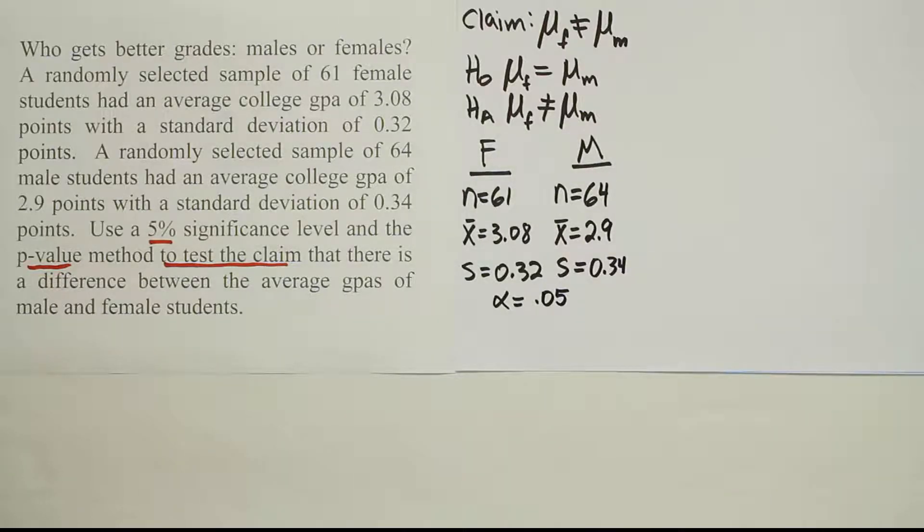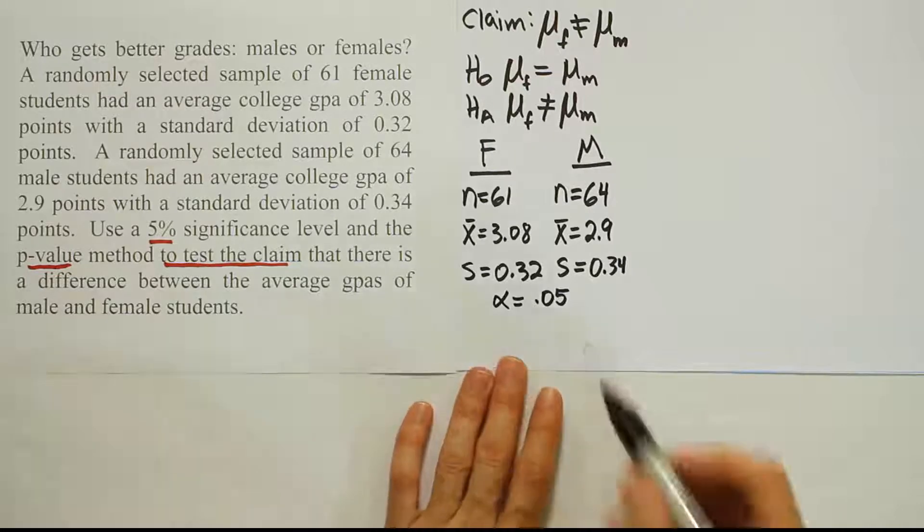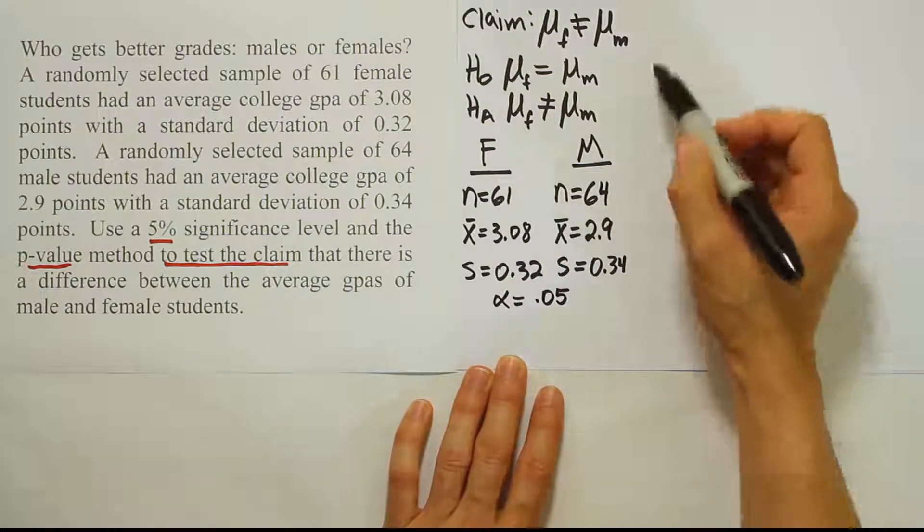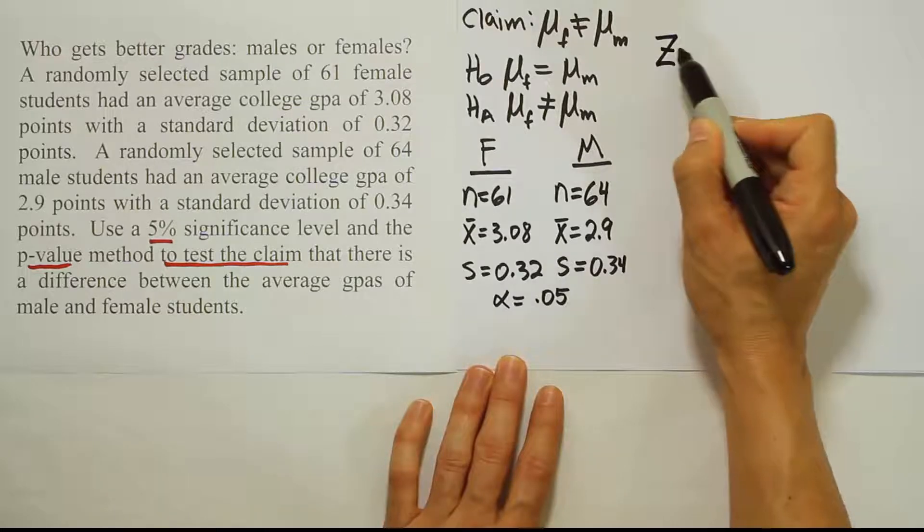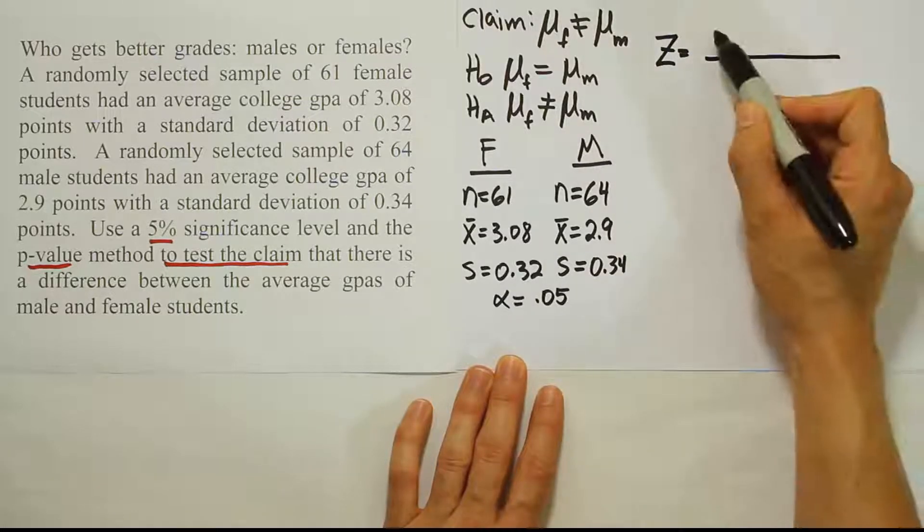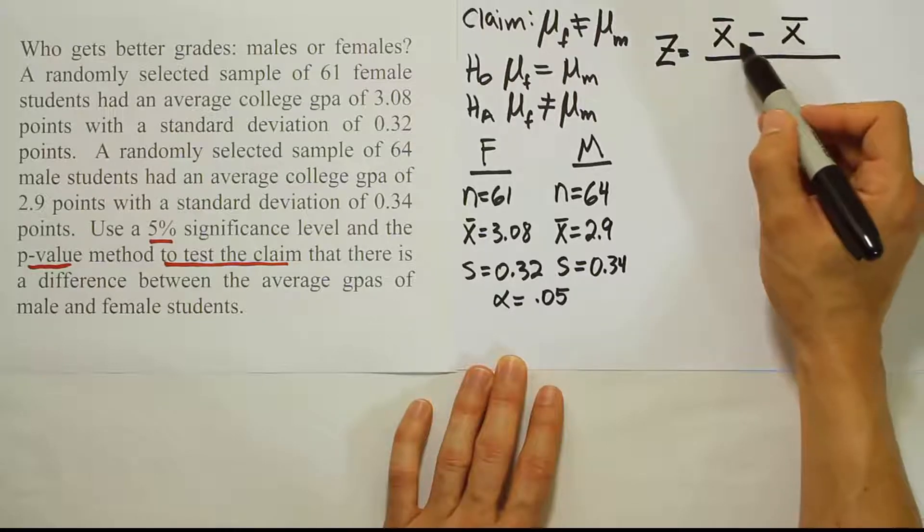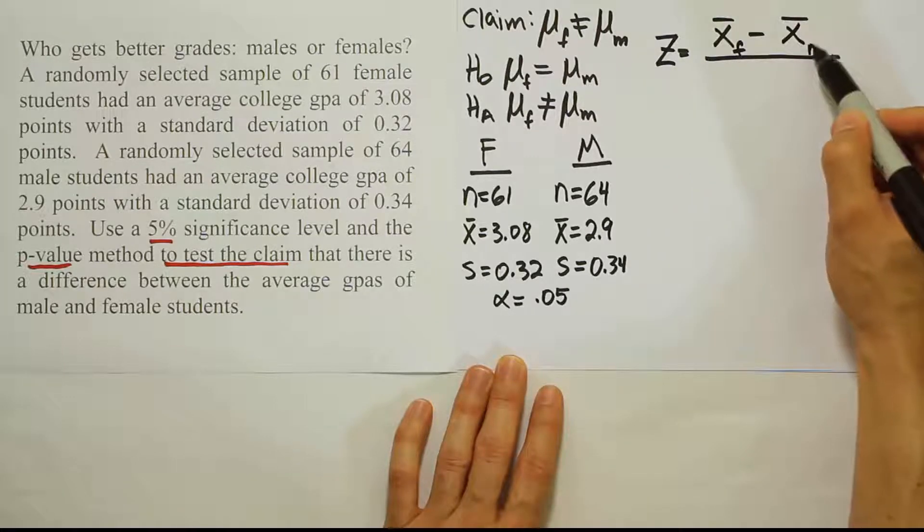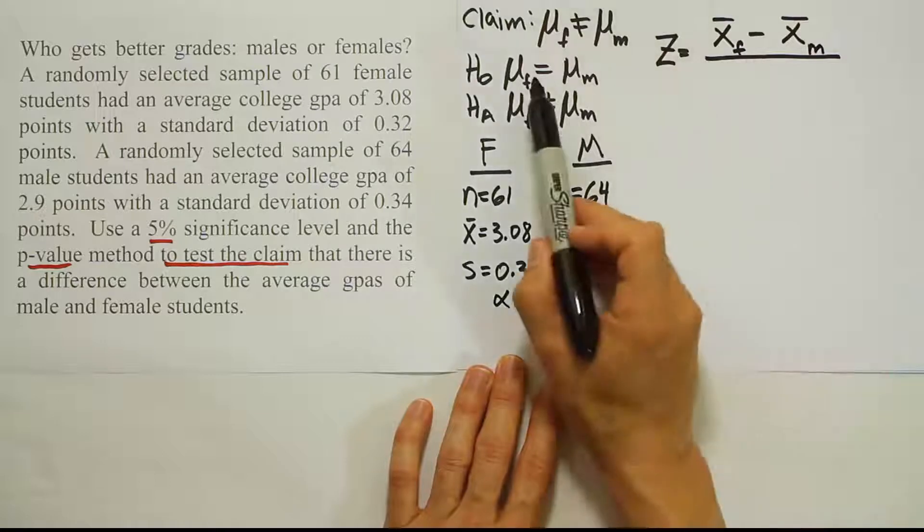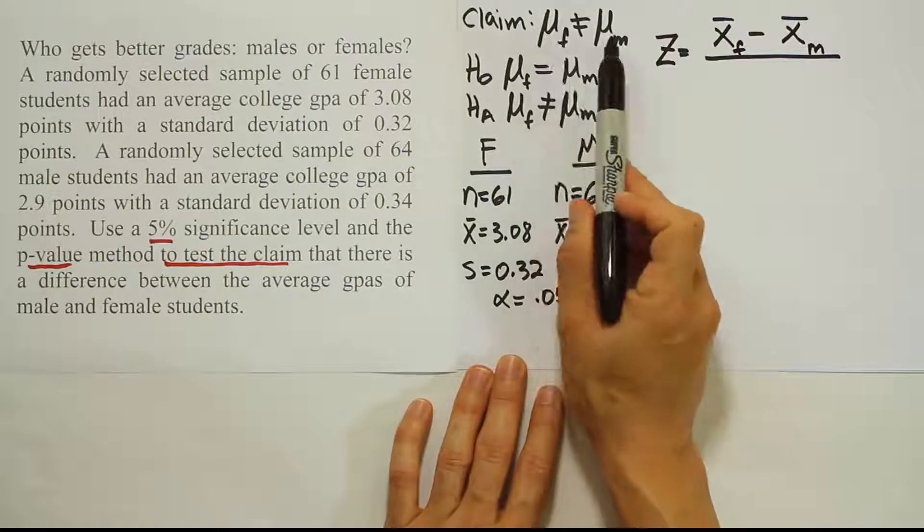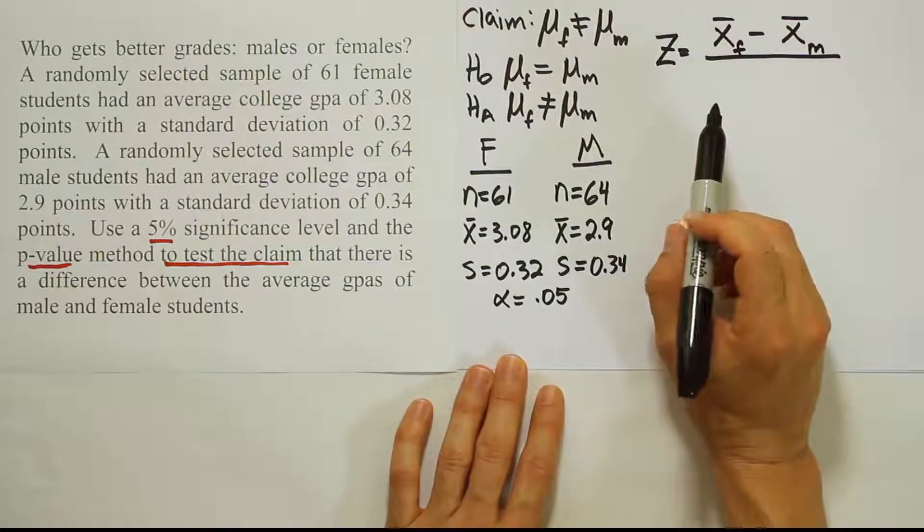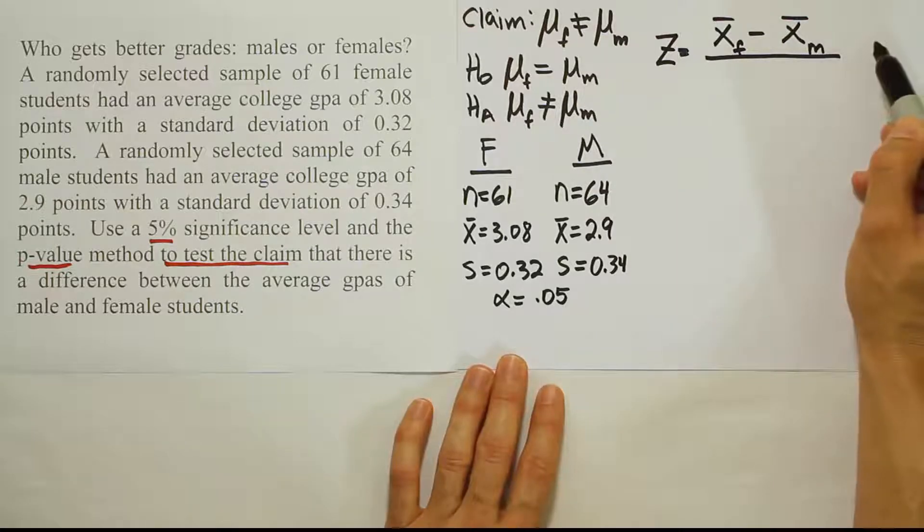Our next step is to come up with a test statistic. We want to put the test stat formula down and work out the test statistic. The formula for the test stat here is going to be a z test stat because the sample sizes are both large. So we're going to use z as the notation. Then we'll have x̄ minus x̄. In this case, it's going to be the x̄ for females minus males. We're doing it in that order because that's how we have the claim set up, female to male.